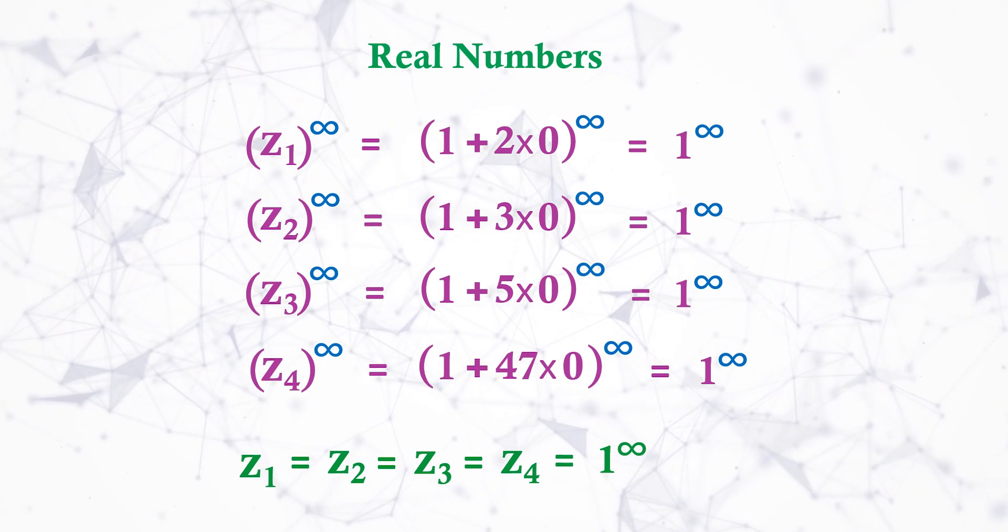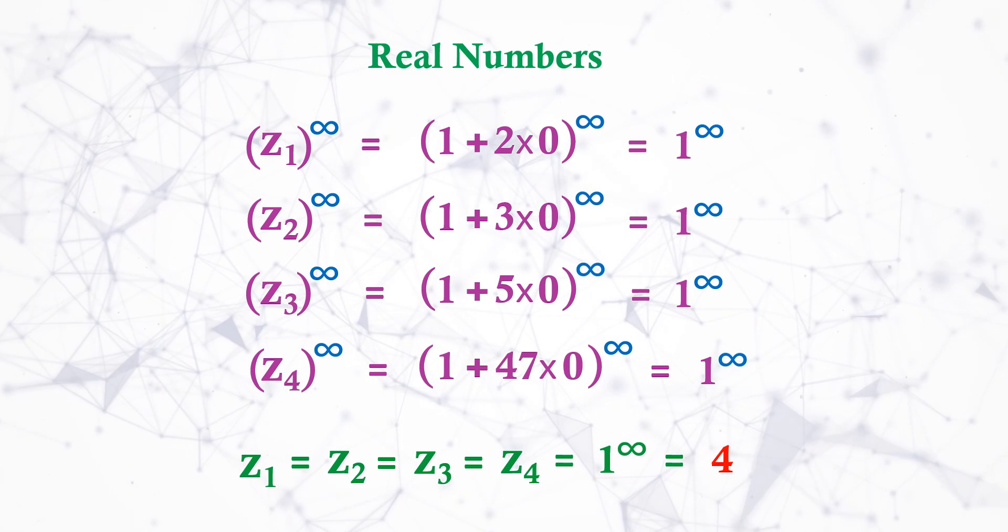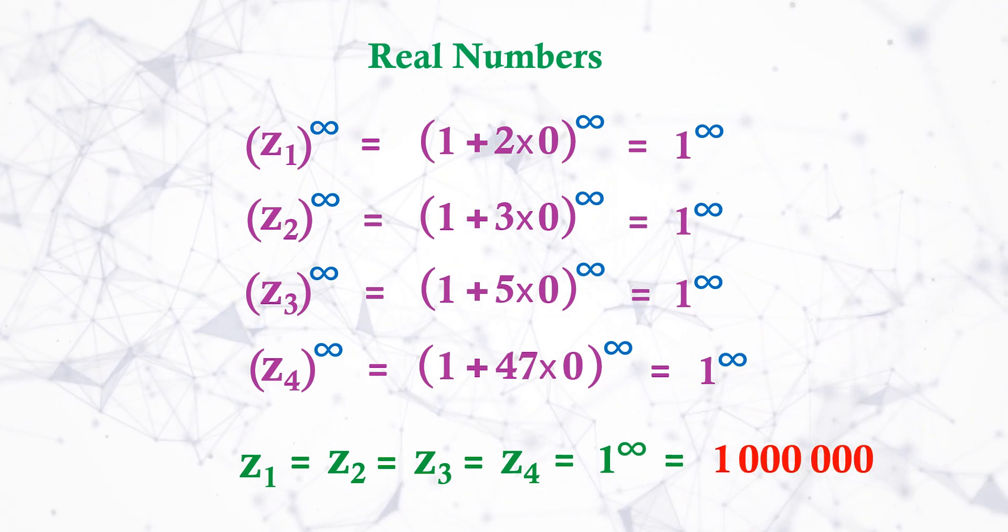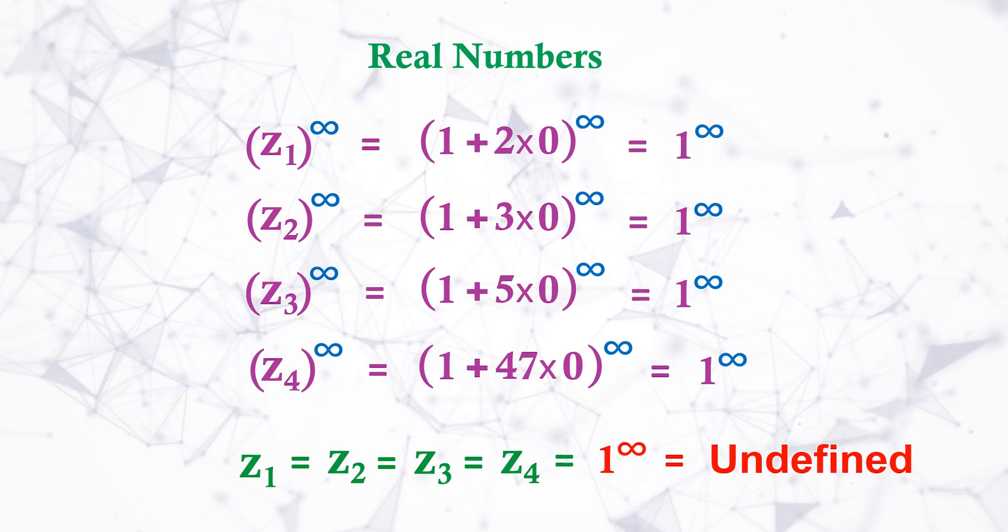And 1 to the power infinity can be any numbers such as 1, 2, 3, 4, 5 or 1 million. It can be any number. Hence, 1^∞ is undefined or indeterminate.